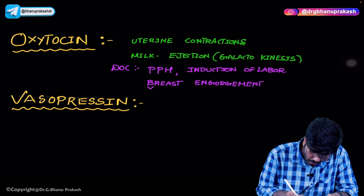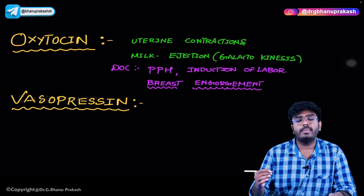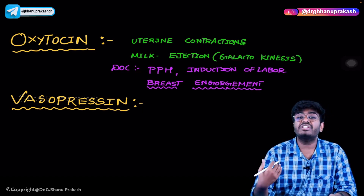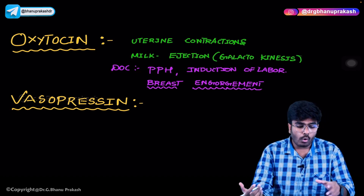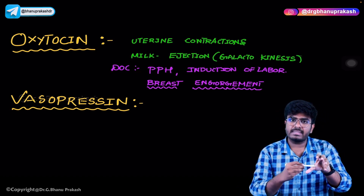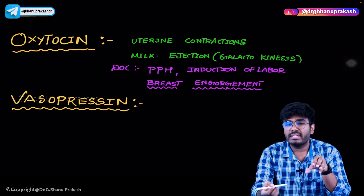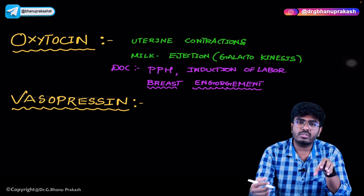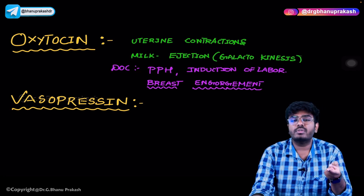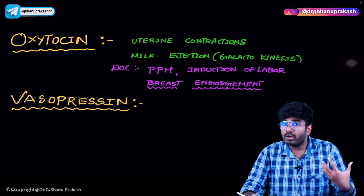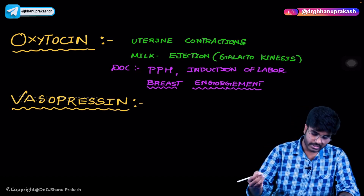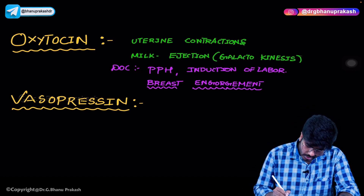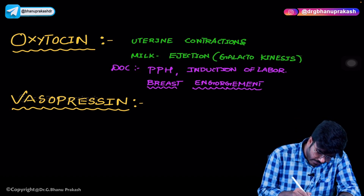Oxytocin is also the drug of choice for breast engorgement. After delivery, if milk production is present but milk ejection is not happening due to some blockage, we need to get the milk out. Since oxytocin causes milk ejection, it is used to treat breast engorgement where milk is not coming out from the breast.